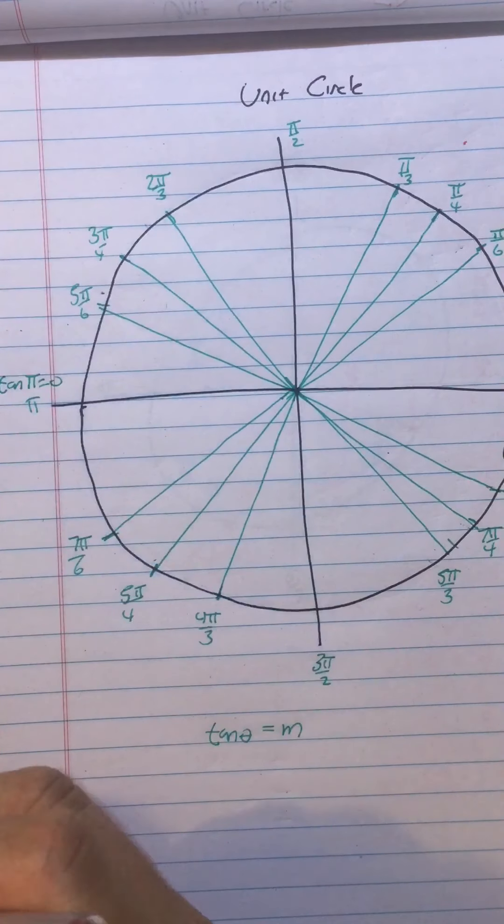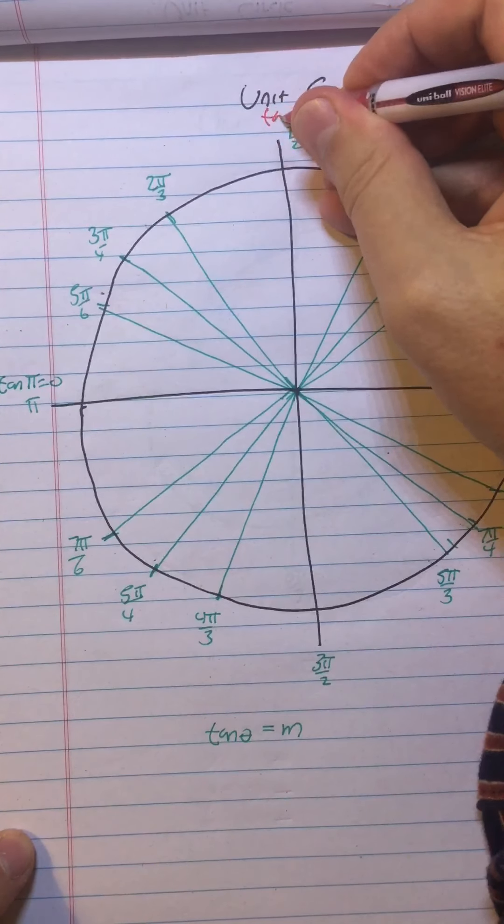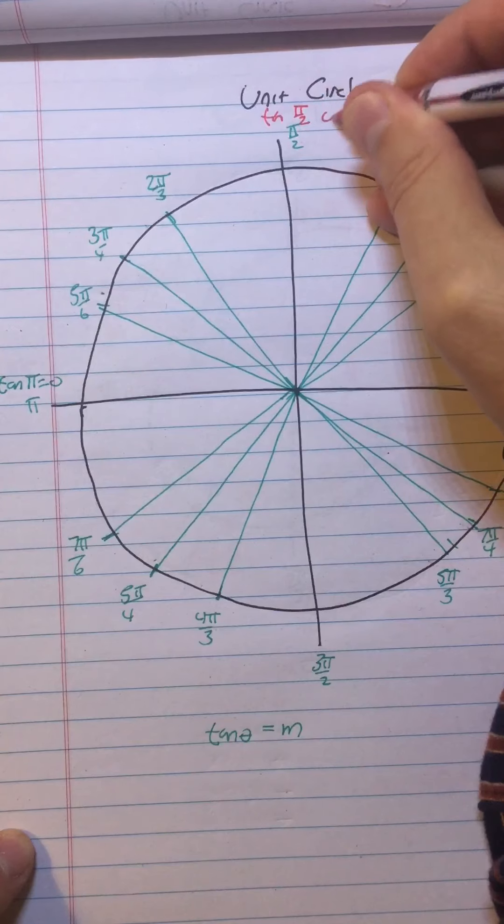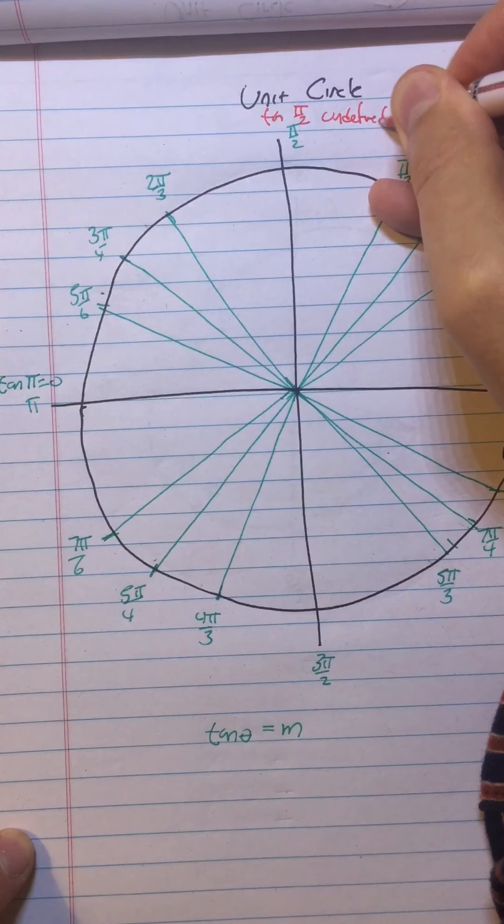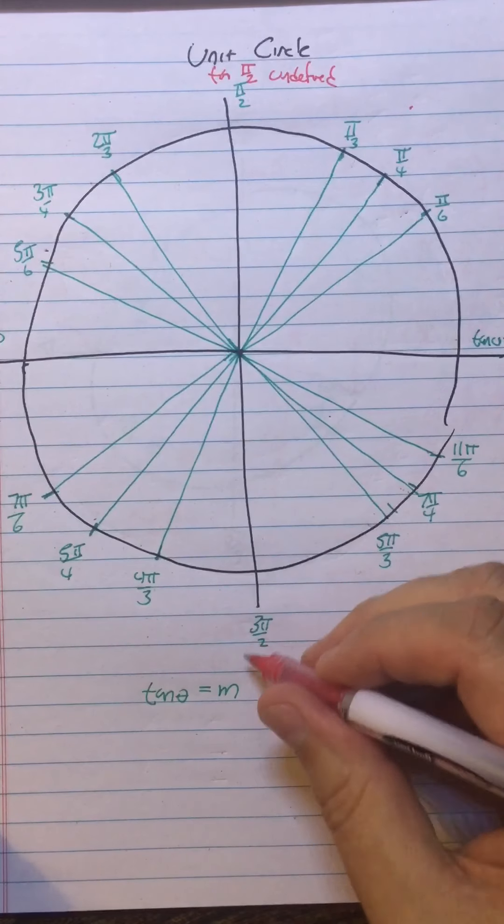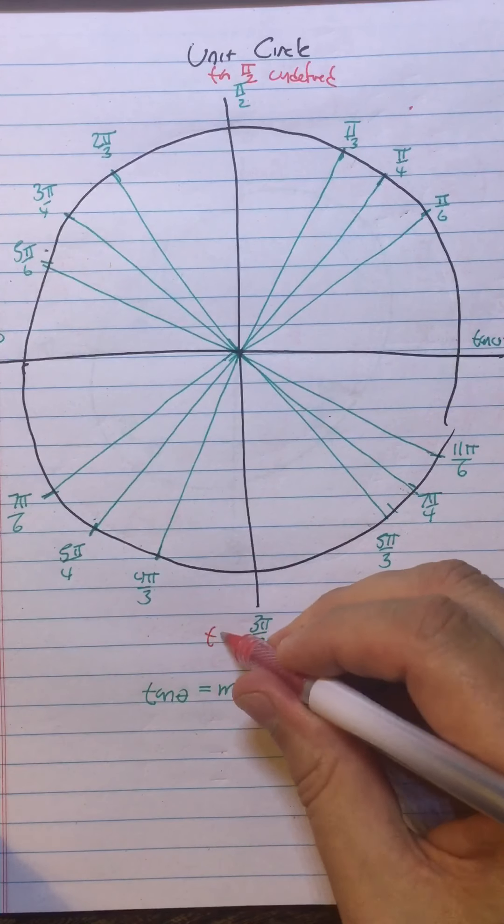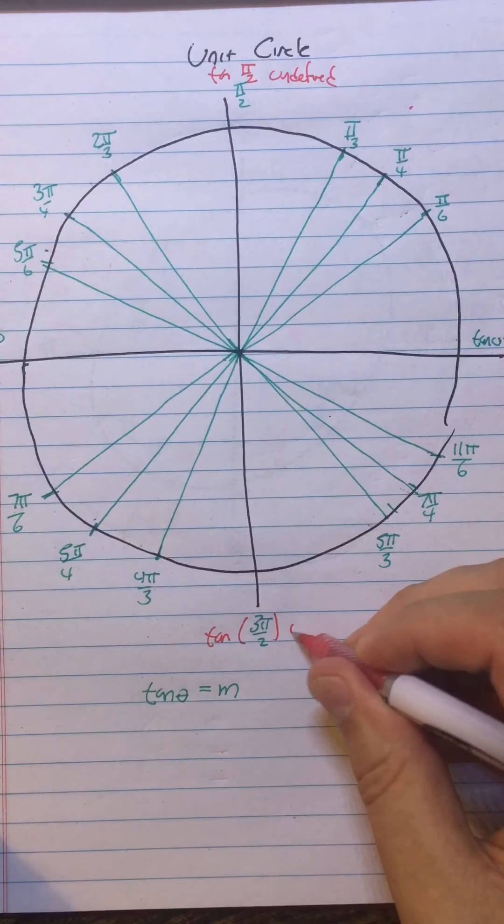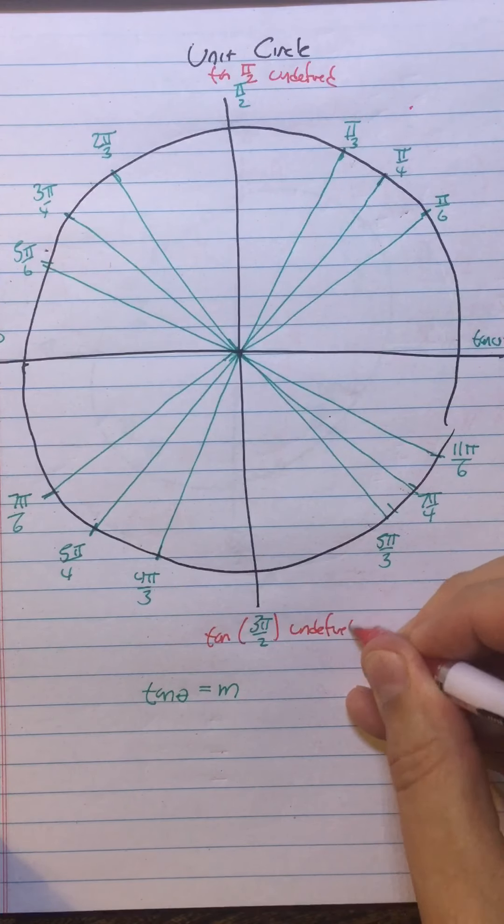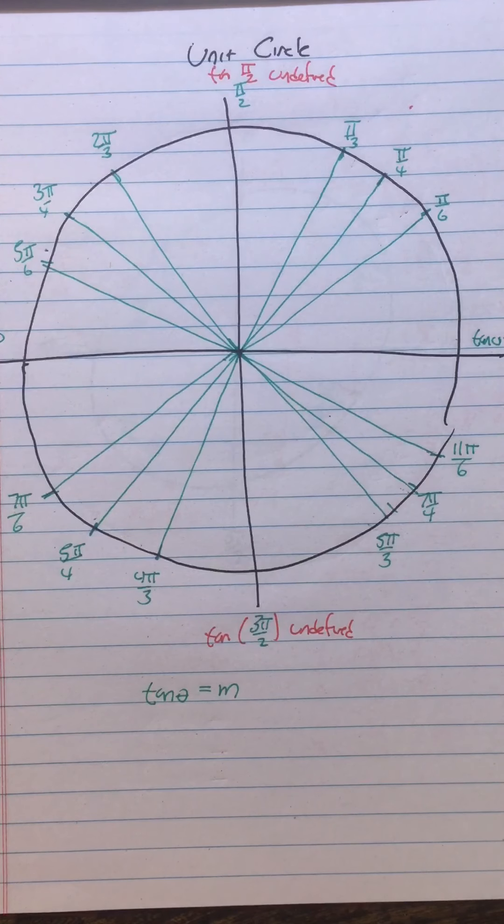I'm going to use a different color for that. Tangent of π/2 is undefined because the segment is vertical, and tangent of 3π/2 is undefined because the slope is vertical.